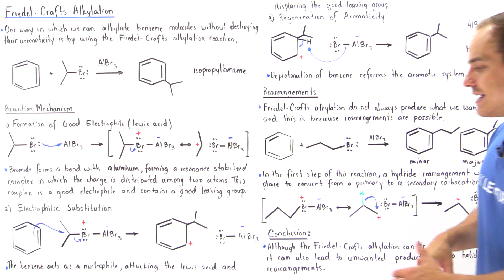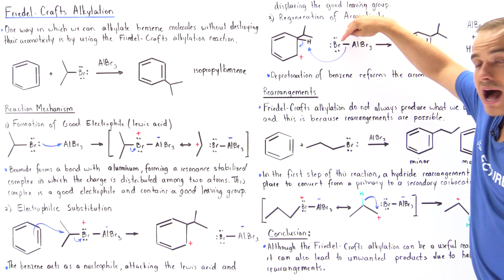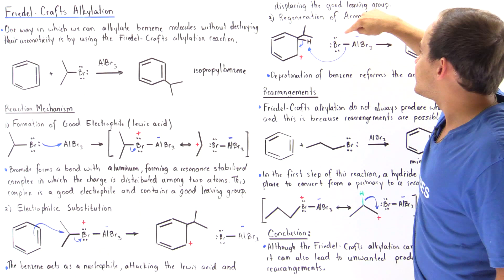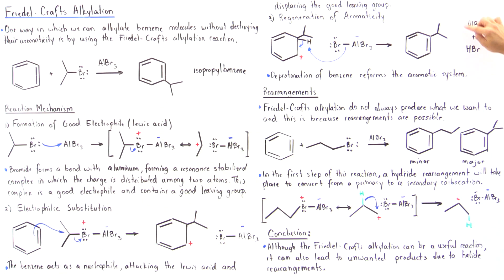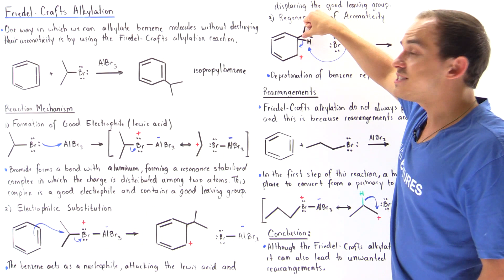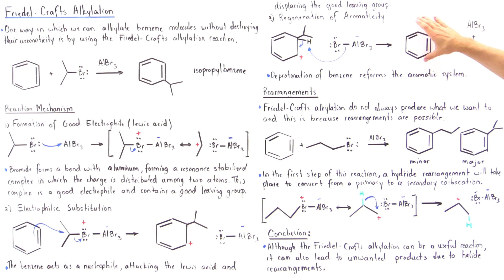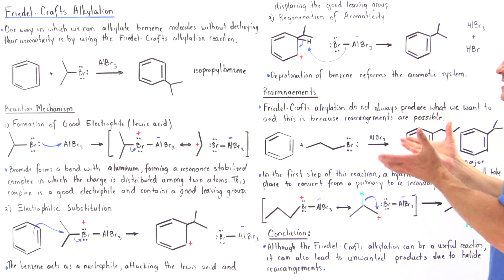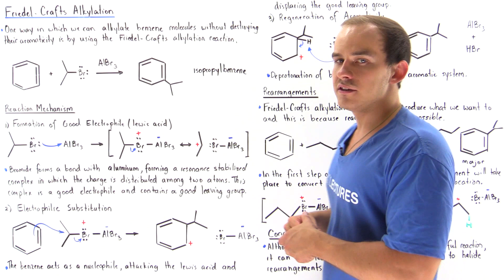The way we regenerate aromaticity is as follows: the bromide breaks off and grabs the H atom found on the same carbon as the isopropyl group. This removes the H atom, regenerating our catalyst, and we form HBr. In the process, the sigma bond forms a pi bond between the two carbons, reforming our benzene ring. So the last step is the deprotonation of our benzene — we substitute the H for the isopropyl group. This is the final step — the Friedel-Crafts alkylation.